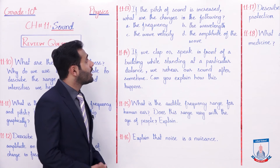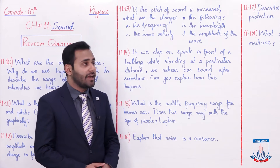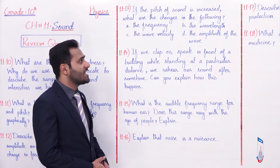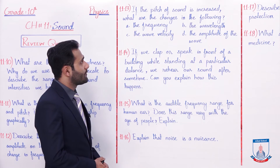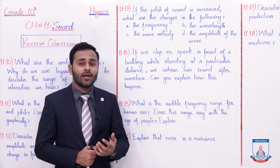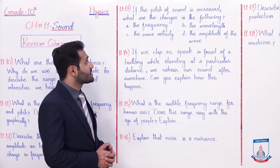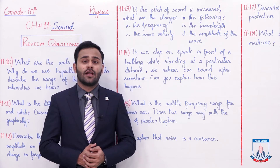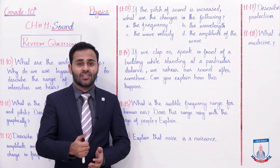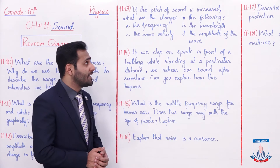Question 11.13: If the pitch of sound is increased, what are the changes in the following - A: the frequency, B: the wavelength, C: the wave velocity, and D: the amplitude of the wave? So if the pitch of sound is increased, usse in sub par kya effect hoga? The first is frequency - as discussed before, pitch jo hai woh depend kar rahi hoti hai frequency par. So agar pitch change ho rahi hai that means wahaan par frequency bhi change ho rahi hai. Similarly B - the wavelength. As according to the formula V = f lambda, lambda is equal to v by f. That means lambda is inversely proportional to frequency - agar aapki frequency kam ho rahi hogi toh wavelength increase karegi, lekin agar aapki frequency increase kar rahi hai toh wavelength decrease karegi.